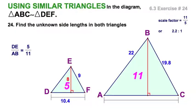That makes good sense. So DE is to 22 as 5 is to 11. I like that. Pretty obviously 10.